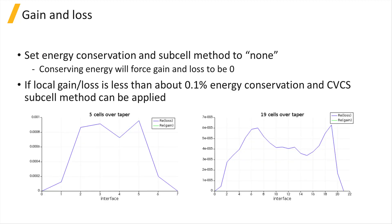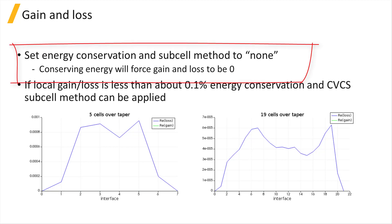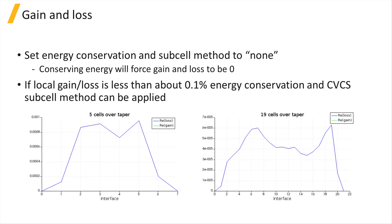When looking at the gain and loss results from the local diagnostics, first make sure that the energy conservation method is set to none and the CVCS subcell method is not being used, since the CVCS subcell method also enforces energy conservation. Enforcing energy conservation can improve simulation accuracy, but only when the simulation is already close to conserving energy. When running this test, it's best to disable energy conservation so that you can check if the simulation is close to conserving energy.